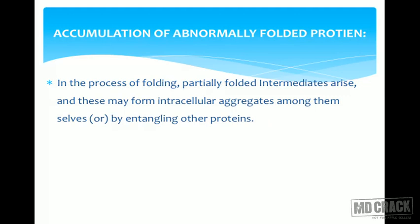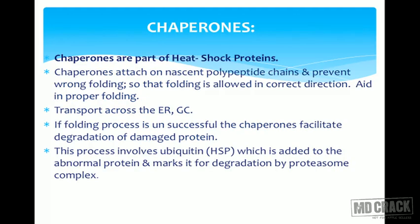Partially folded protein intermediates arise with aging and may form intracellular aggregates or become entangled with other proteins. Chaperones, part of the heat shock protein family, attach to nascent polypeptide chains to prevent wrong folding, ensuring correct folding direction. They also aid in transport of proteins across the endoplasmic reticulum and Golgi apparatus. If folding is unsuccessful, chaperones facilitate degradation of damaged proteins via ubiquitin, an enzyme complex that targets abnormal proteins for degradation by the proteasome complex.